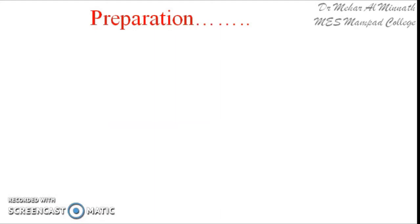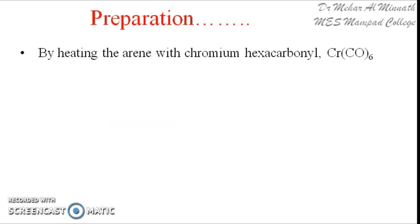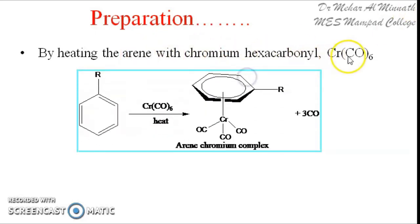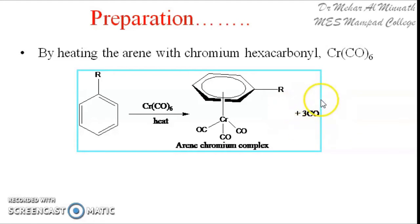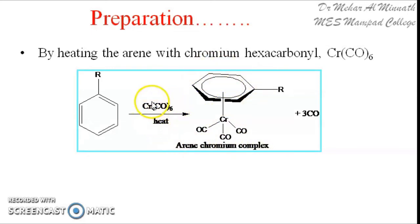Let us see the preparation of these complexes. It is easy to prepare — you just heat the arene with chromium hexacarbonyl. You heat the arene with chromium hexacarbonyl and you get the arene-chromium hexacarbonyl complex. Out of the 6 carbonyl groups attached to chromium, 3 carbonyl groups leave as carbon monoxide. The other 3 carbonyl groups remain attached to the chromium, which is then attached to the benzene or aromatic ring to give the arene-chromium pi complex.